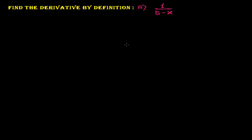Welcome back once again. Here is another problem of finding a derivative by the first principle method, or by the definition. The question is asking us to find the derivative of 1 over (5 minus x).